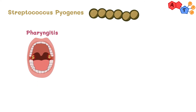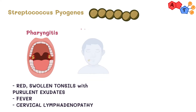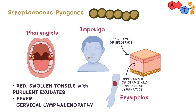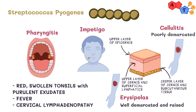Pharyngitis is characterized by red, swollen tonsils with purulent exudates, fever, and cervical lymphadenopathy. For the skin infections: first we have impetigo, which affects the upper layers of the epidermis. Then we have erysipelas, which affects the upper layers of the dermis and the superficial lymphatics. Lastly, we have cellulitis, which affects the deeper layers of the dermis and the subcutaneous tissue. To differentiate erysipelas from cellulitis on gross inspection, erysipelas is well demarcated and raised, whereas cellulitis is poorly demarcated.